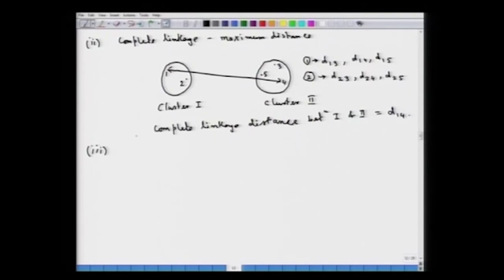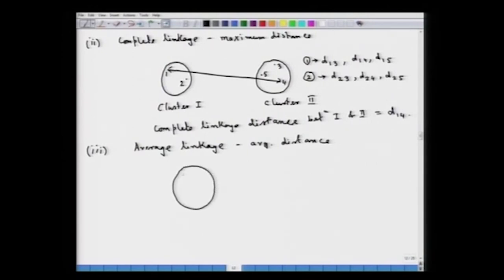There is a third type of distance measure called average linkage. This looks at the average distance — the average of all pairwise distances d(i,j) where i belongs to cluster 1 and j belongs to cluster 2. We look at all possible such d(i,j)'s with i belonging to cluster number 1 and j belonging to cluster number 2, and find their average.